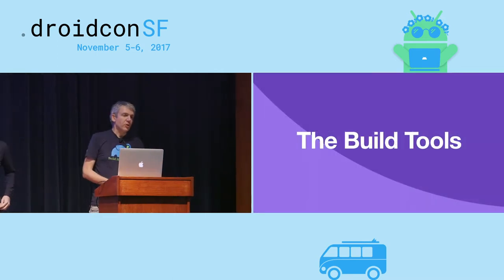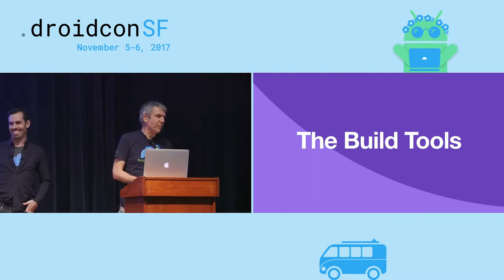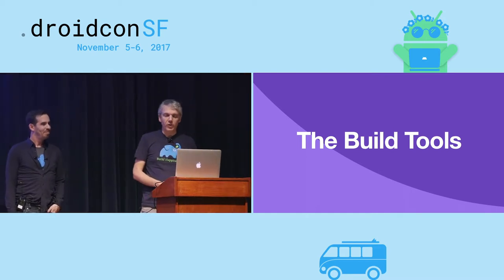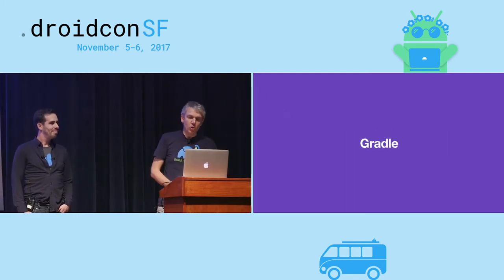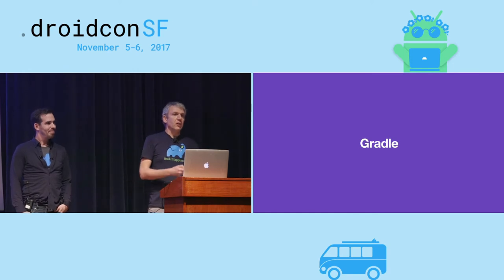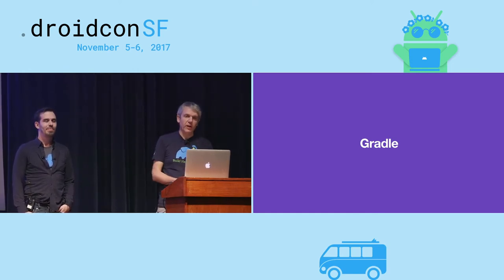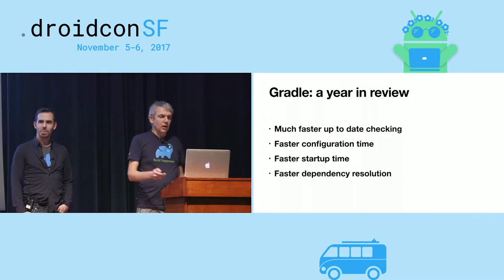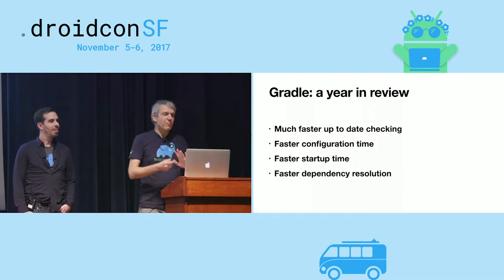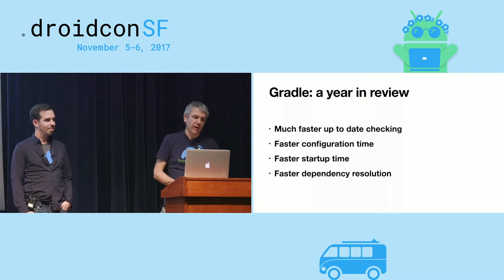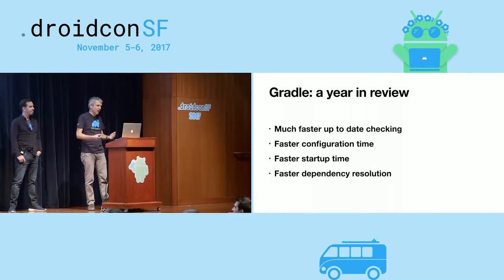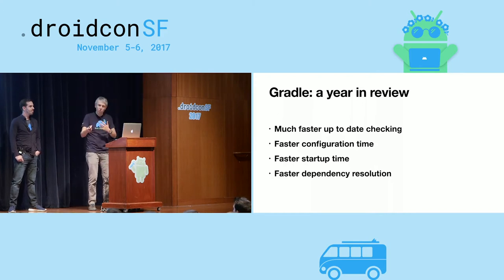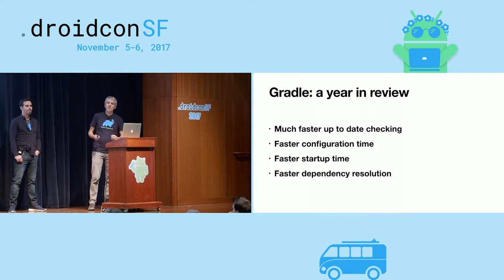I want to talk about the general improvements that have been made, the mechanisms, the tools that have been added, before Cesar continues with applying that to the Twitter build and looking at the results. When you look at the Gradle build platform, independent of the Gradle Android plugin, we have improved performance in many areas — that was our main focus. Much faster up-to-date checking, faster configuration time, faster startup time — three to four hundred milliseconds. And faster dependency resolution.